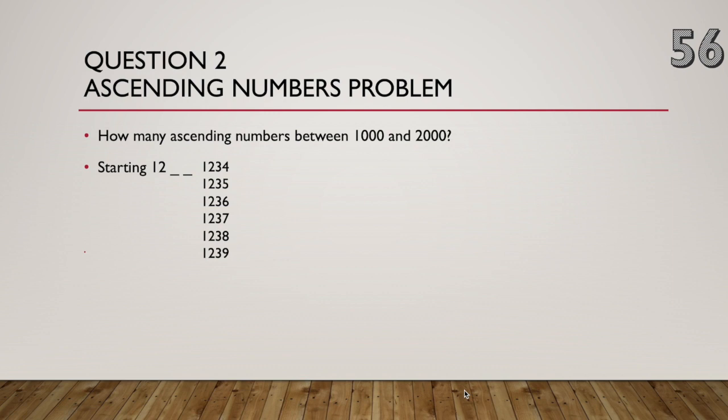So starting 1, 2, we have these solutions that begin 1, 2, 3. So we have six solutions there. If we start 1, 2, 4, we've got five solutions. 1, 2, 5, there are four solutions and so on. 3, 2 and 1.